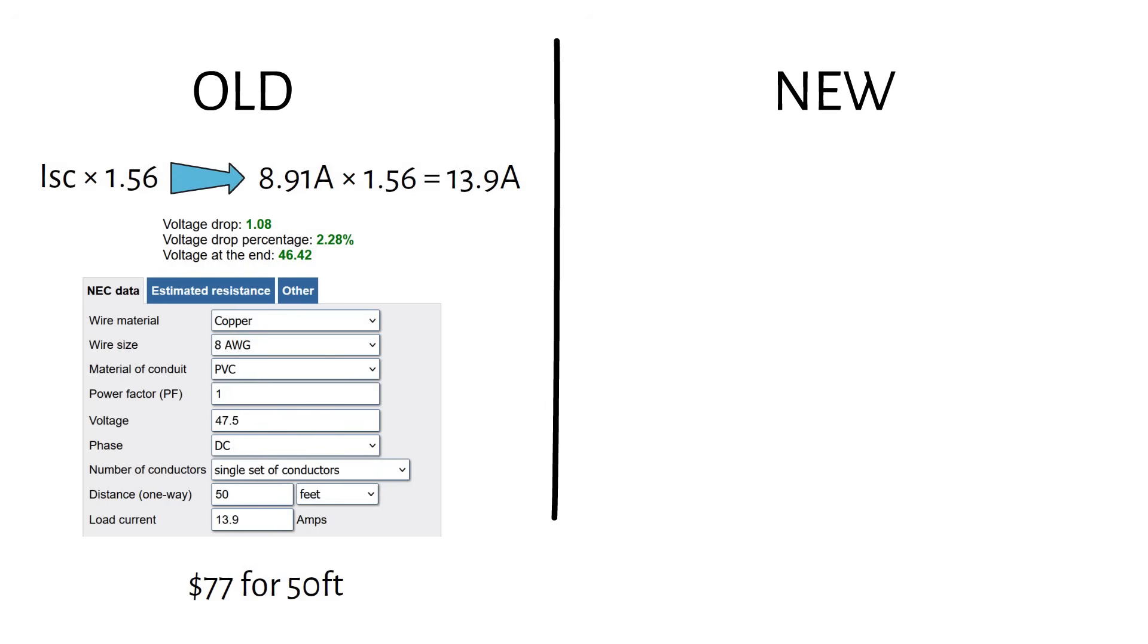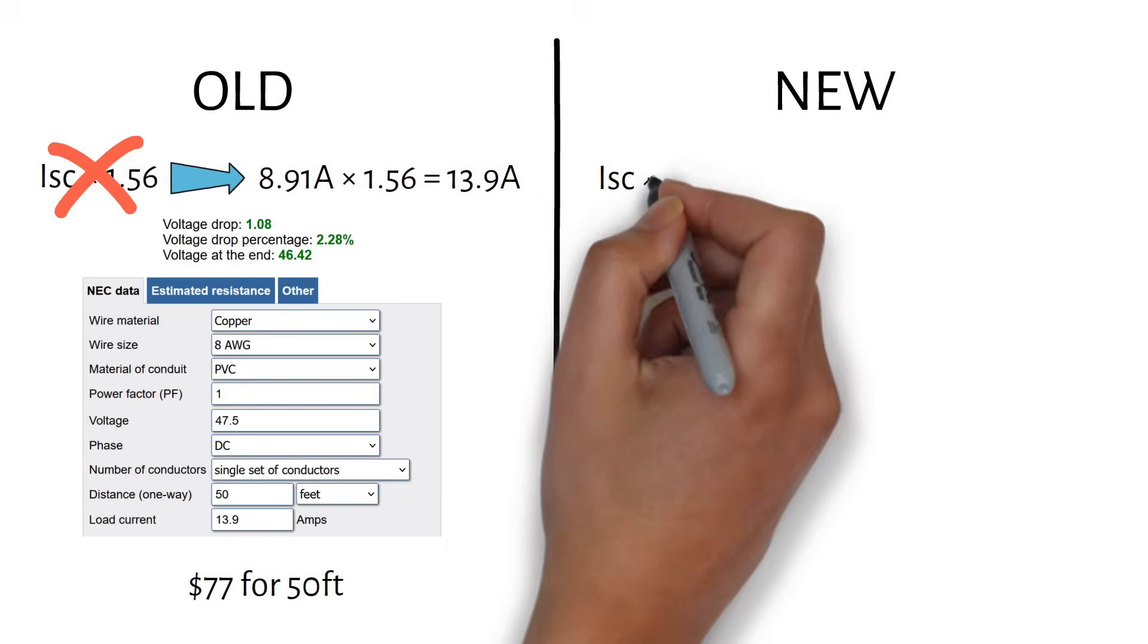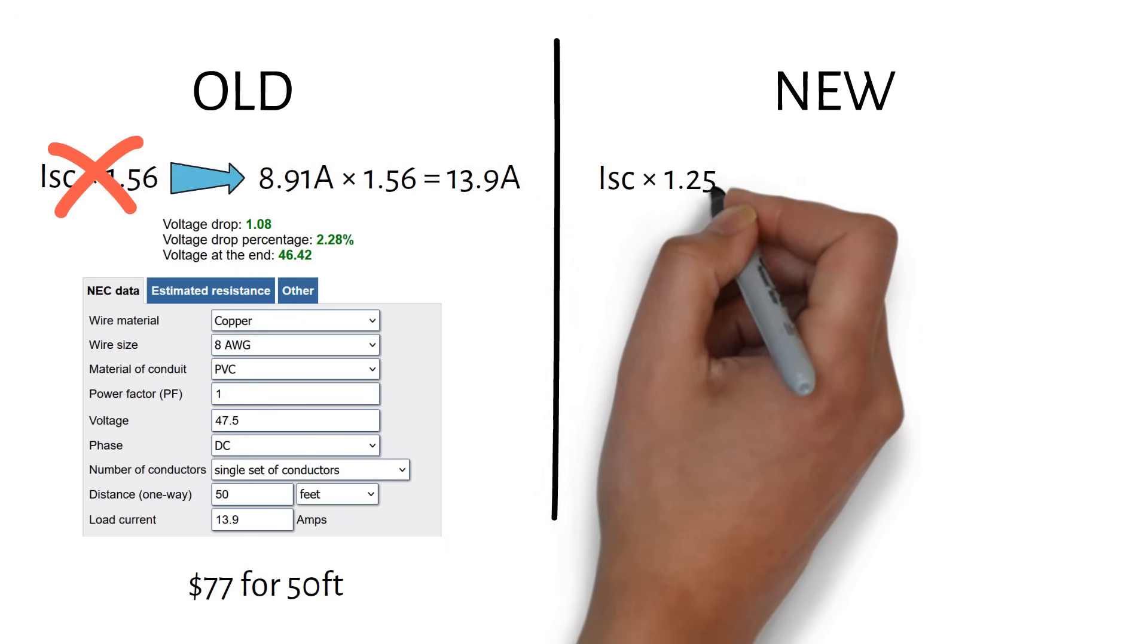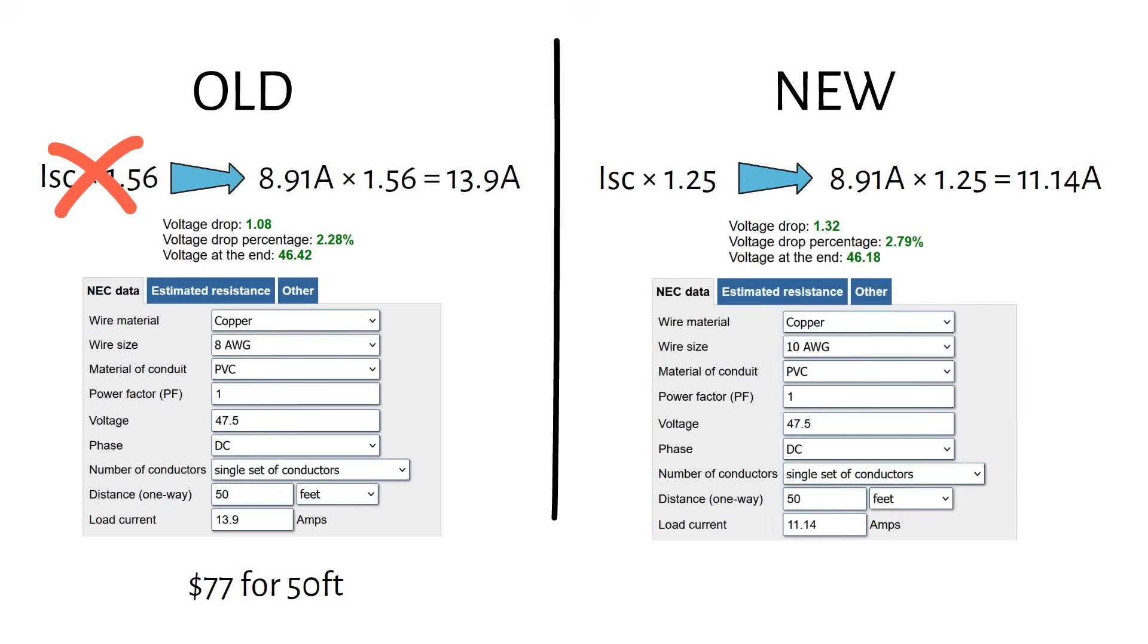Now let's repeat the voltage drop calculation with the new method. Instead of using the ISC times 1.56, we're using ISC times 1.25. That's because in a voltage drop calculation, you don't need to add the additional safety factor for direct sunshine. So for this example, it's 11.14 amps. All the other numbers stay the same.